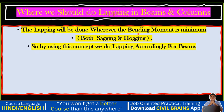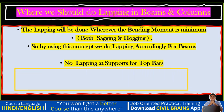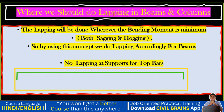Using this concept, we do lapping accordingly for beams. In a beam we have a top bar and a bottom bar. Whenever you do the lapping for the top bar, you should not do it at the support. So if this is my beam and this is my top bar, no lapping should be done at this support or at this support.